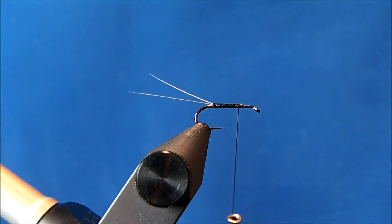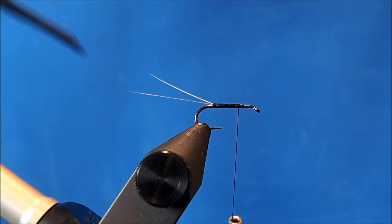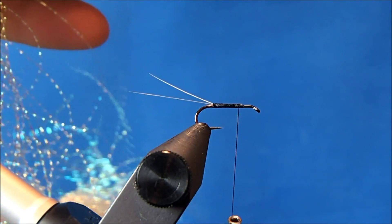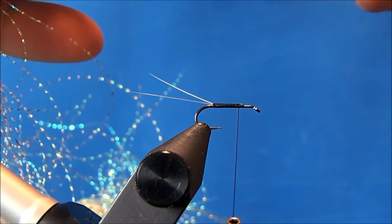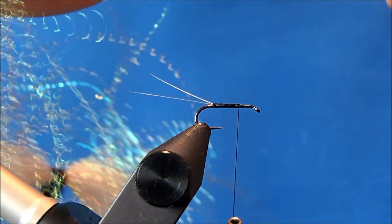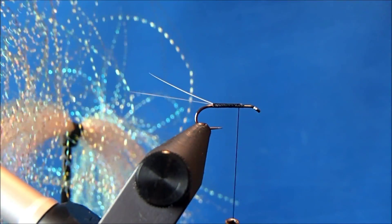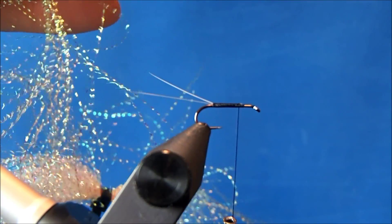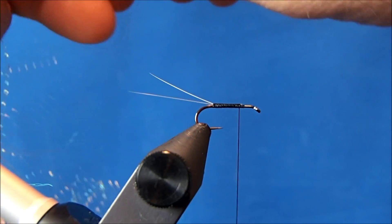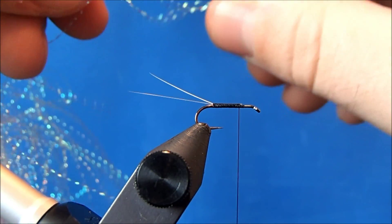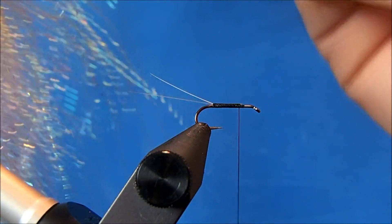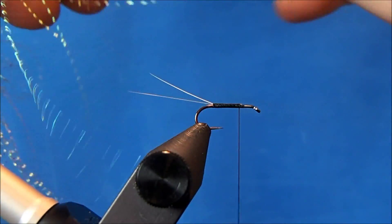Now I can work on the wings, and for that I'm going to use crystal flash. About the easiest way I've found to make these wings, and still it can be tricky at times, is to take four strands and all I'll do is make a loop out of them.